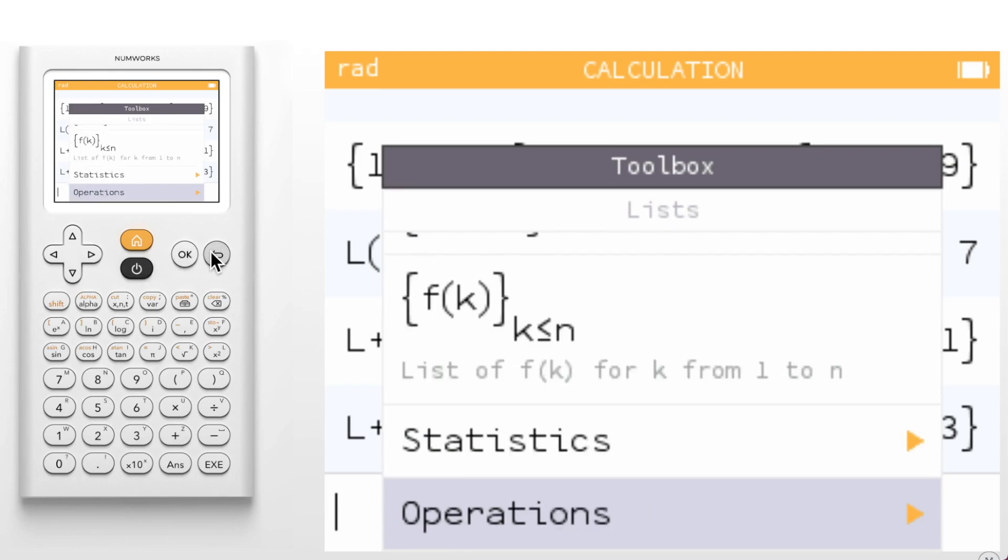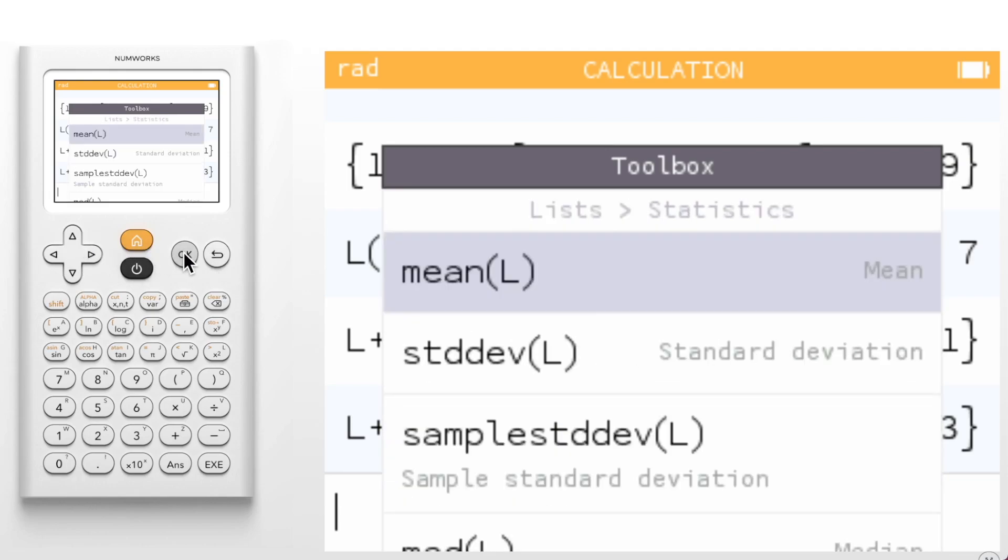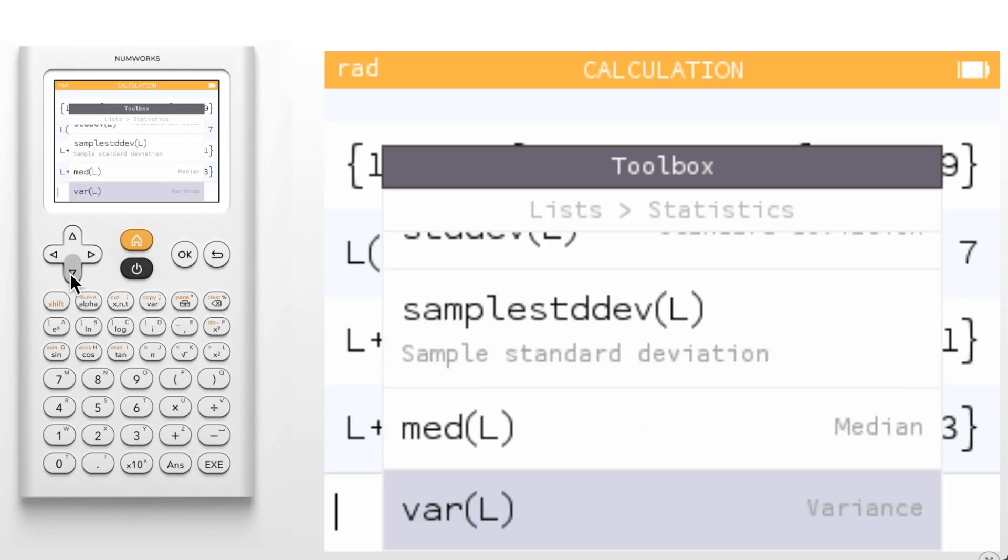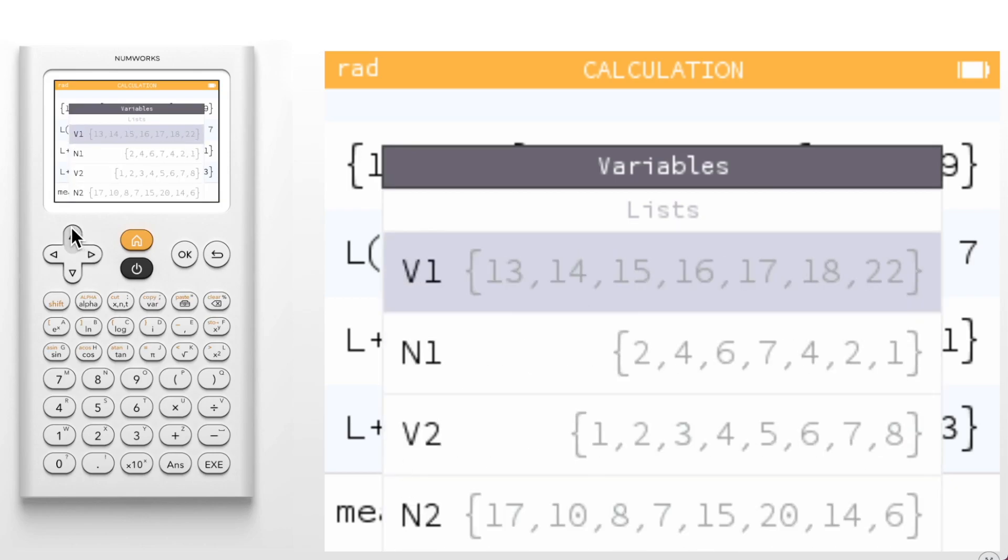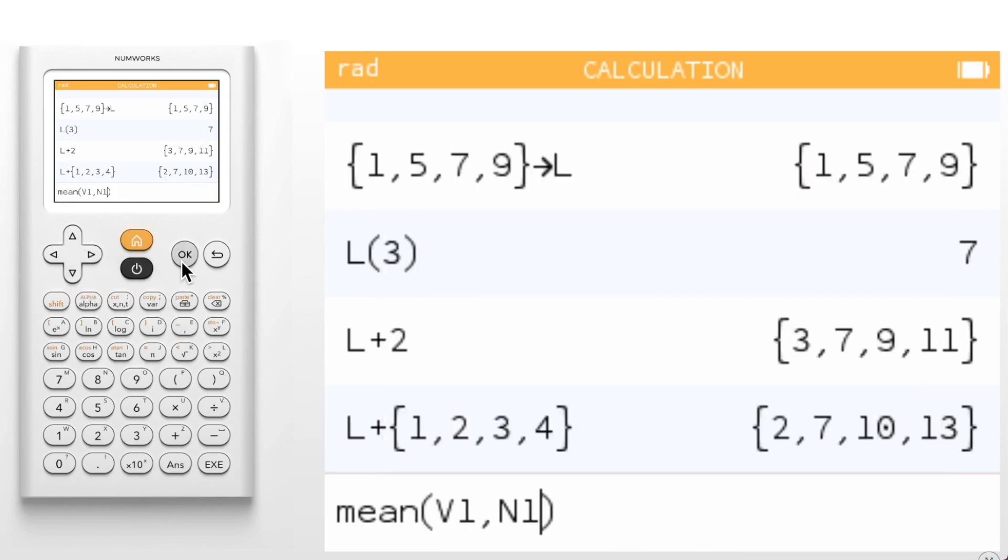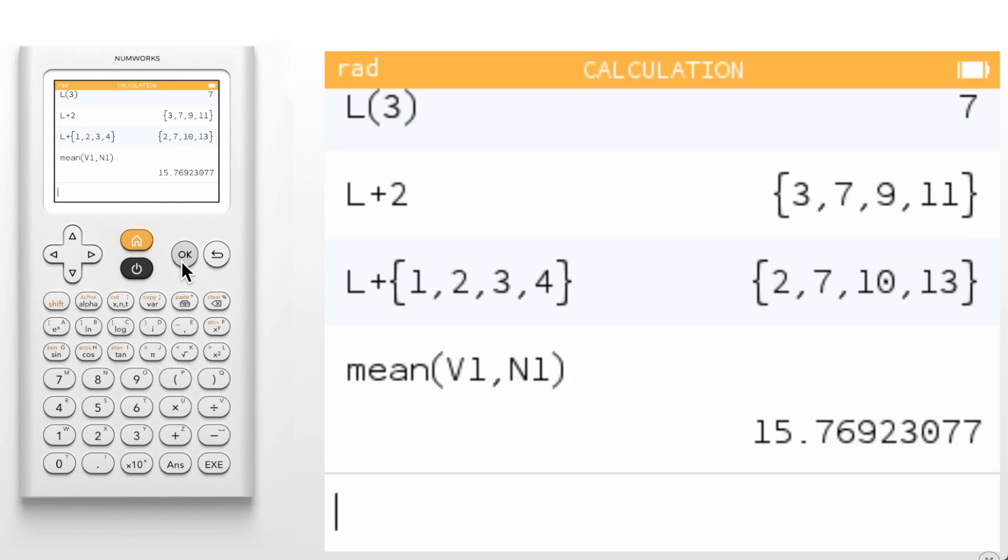Going back and looking in statistics, you'll see that we can calculate the mean, standard deviation, sample standard deviation, median, and variance of a list. For the statistics functions, it may be important to note that two parameters can be used, a list of values and a list of frequencies. If no second parameter is used, we will assume the frequency is 1. So for example, evaluating the mean of v1 with frequency in f1 will give us the same mean we saw in the stats app.